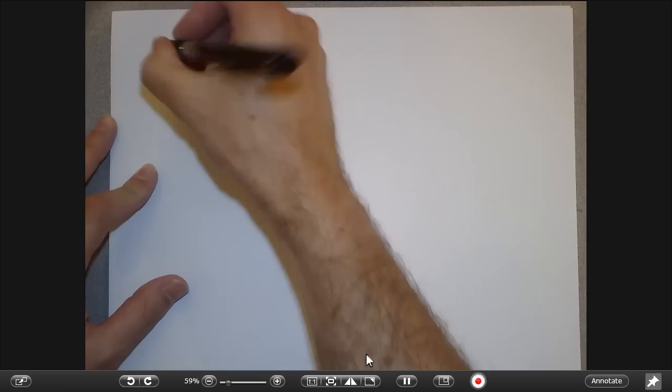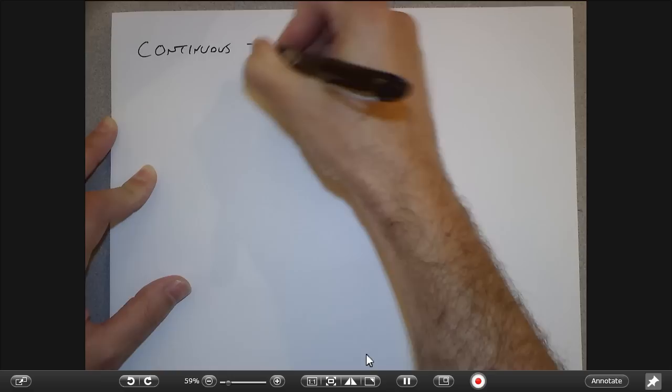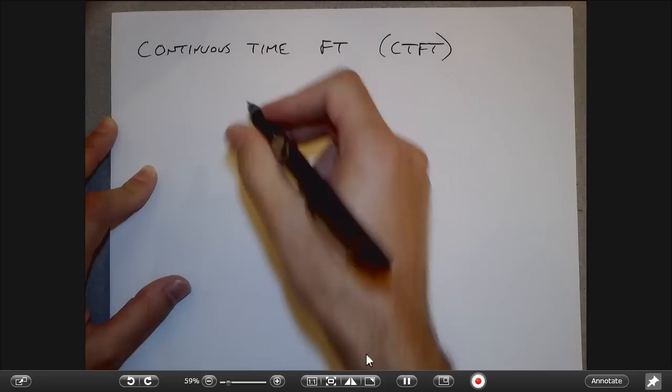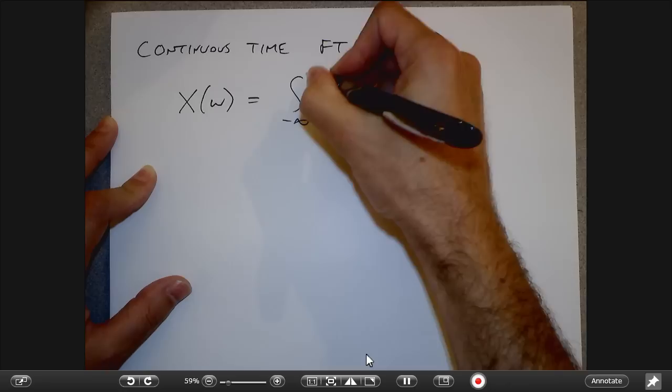We've been staying in continuous time so far. Now we want to get to some stuff you probably haven't seen in the previous class, which is the discrete time Fourier transform. Let's remember the continuous time Fourier transform, which we sometimes abbreviate as CTFT. We talked about that in the previous couple of lectures as being this integral.